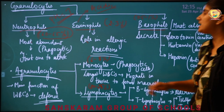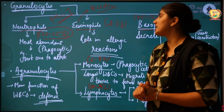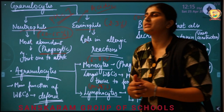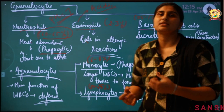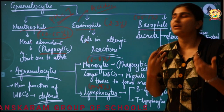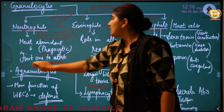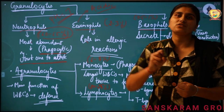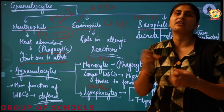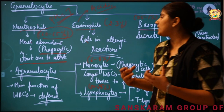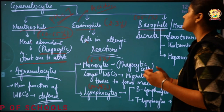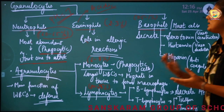Starting with neutrophils — they are the most abundant and their function is that they are phagocytic in nature. Phagocytic means they will phagocytose or eat any foreign particles. If any foreign particle or microorganism enters the body, neutrophils will be the first ones to attack. In any infection, neutrophils rush to the site of infection first and try to eat up the foreign particle. If they can control it, great — if not, they will ask for help from other types of WBCs.